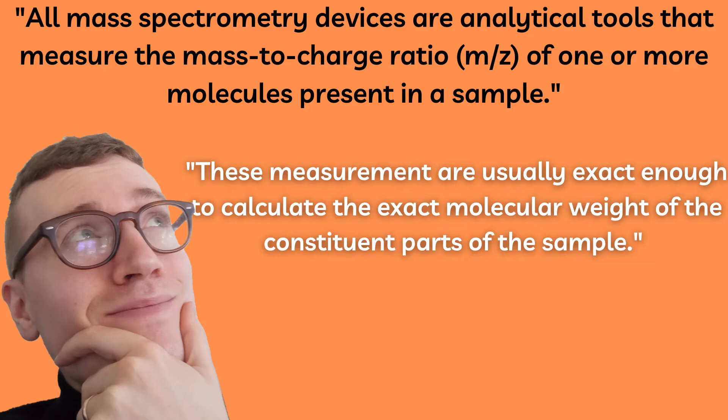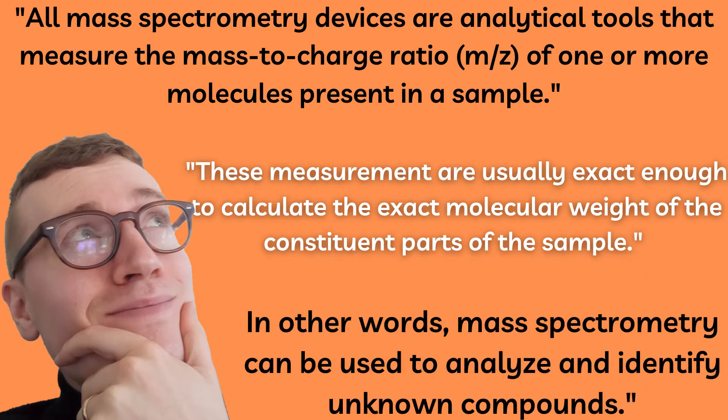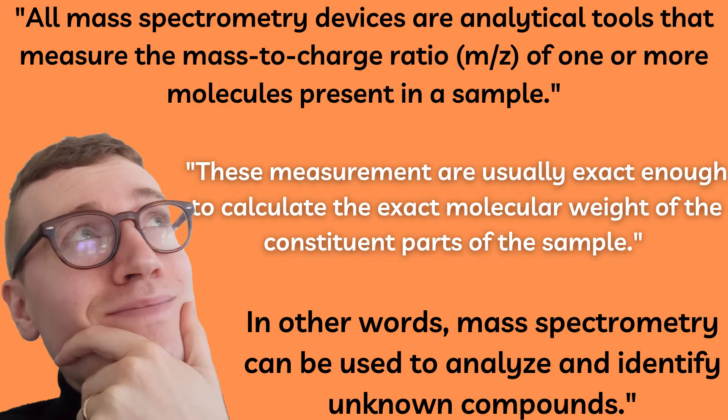These measurements are usually exact enough to calculate the exact molecular weight of the constituent parts of the sample. In other words, mass spectrometry can be used to analyze and identify unknown compounds. We will look closer at how this is done later in the video.